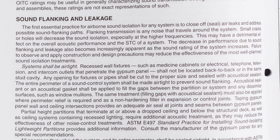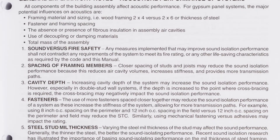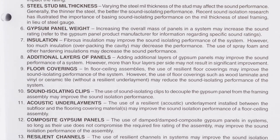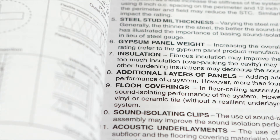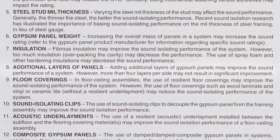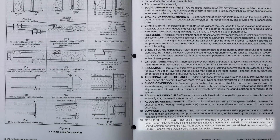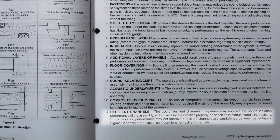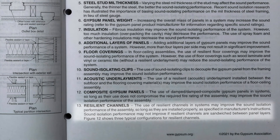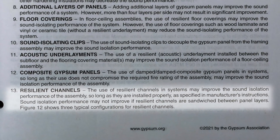Page 30 also has information on sound flanking and leakage, followed by Figure 10 on the impact of ceiling on reducing flanking noise. Thirteen general explanatory notes for acoustical performance systems can be reviewed on page 33. For example, Note 8 addresses the effect of additional gypsum panel layers on acoustics — adding layers may improve sound performance, but more than four layers per side may not result in significant improvement. Note 13 addresses the use of resilient channels: they may improve sound isolation performance so long as installed properly per manufacturer's instructions, but performance may not improve if resilient channels are sandwiched between panel layers. Figure 12 shows three typical configurations for resilient channels.